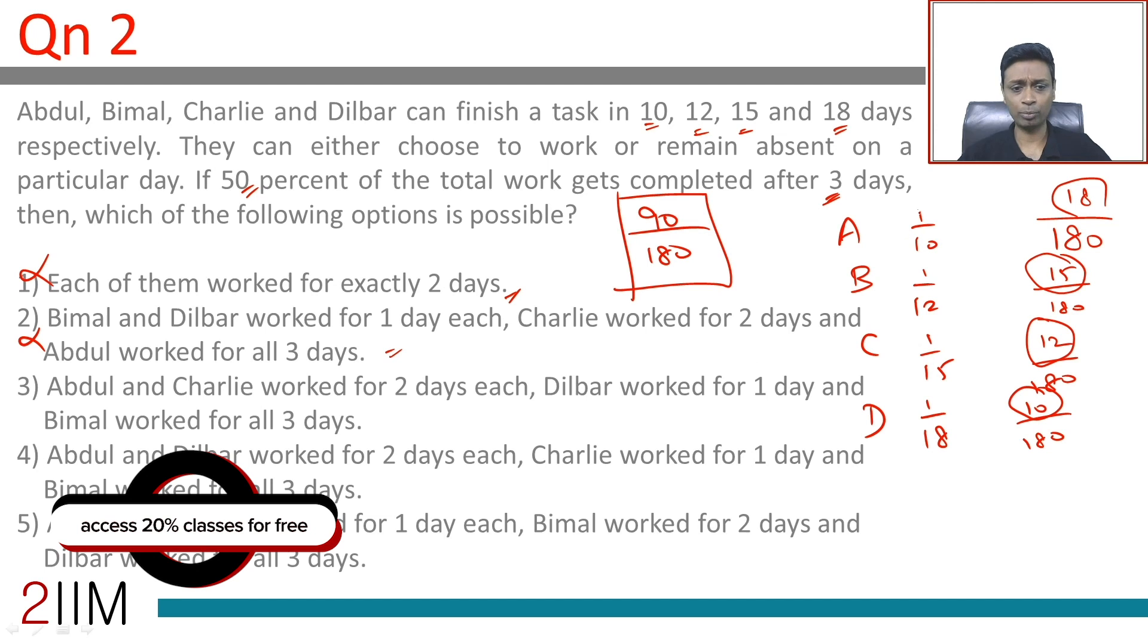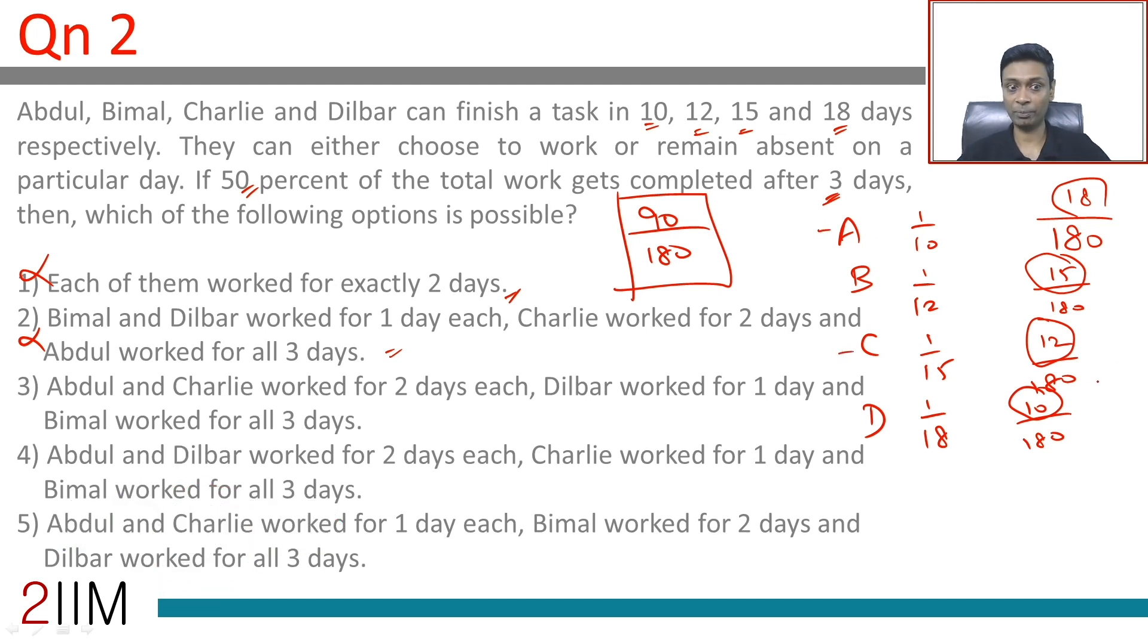So if you have Abdul and Charlie, they add up to 30, that could work out really well. Abdul and Charlie worked for 2 days each, so 18 plus 12, 30, 30, 82, 60. Dilbar worked for a day, 70, Bimal worked all 3 days, plus 45, way over 90, it doesn't work.